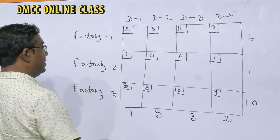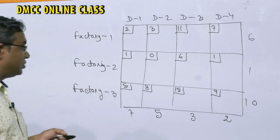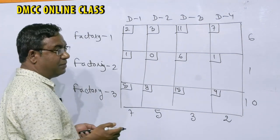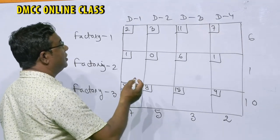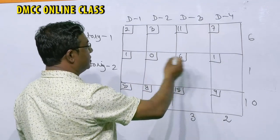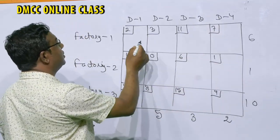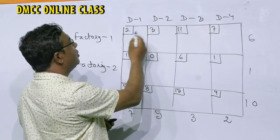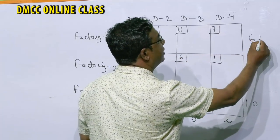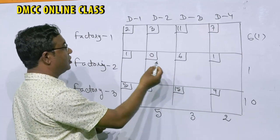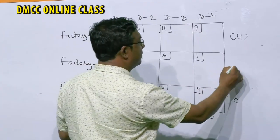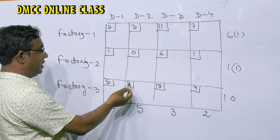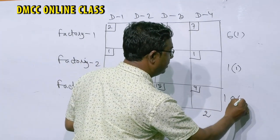Now we find the initial basic solution using Vogel's Approximation Method. First, find the differences between costs row-wise and column-wise. In the first row, the smallest cost is 2, next is 3, so the difference is 1. In the second row, the smallest is 0, next is 1, so difference is 1. In the third row, the smallest is 5, next is 8, so difference is 3.